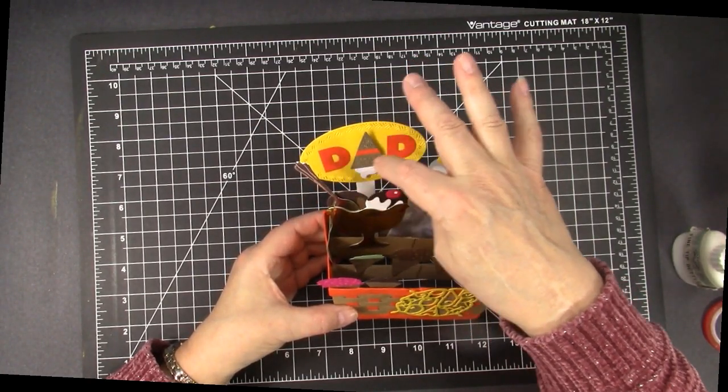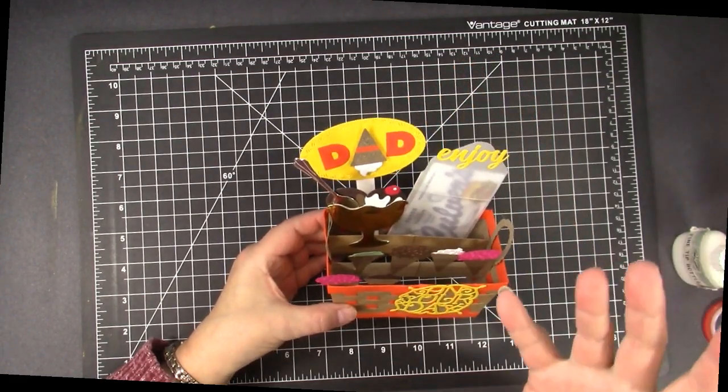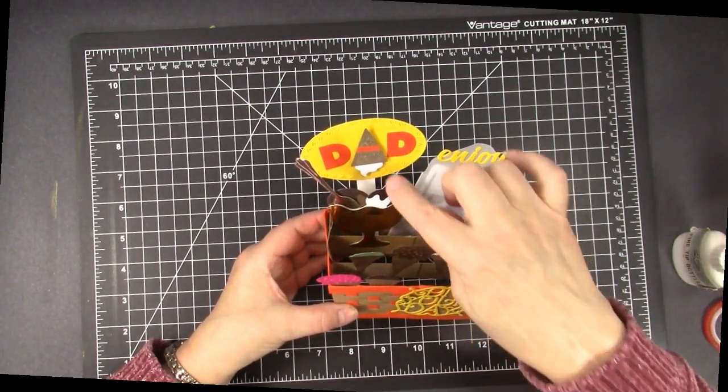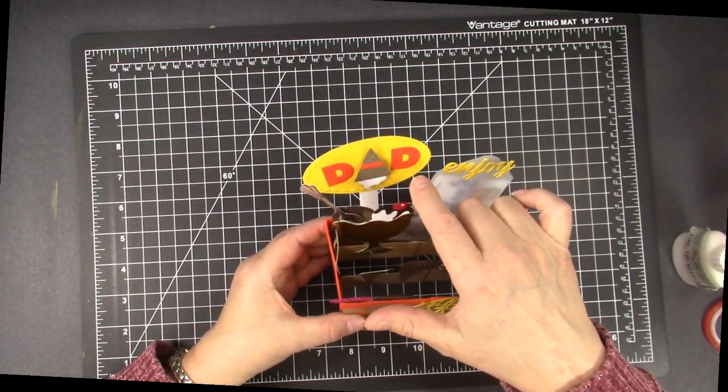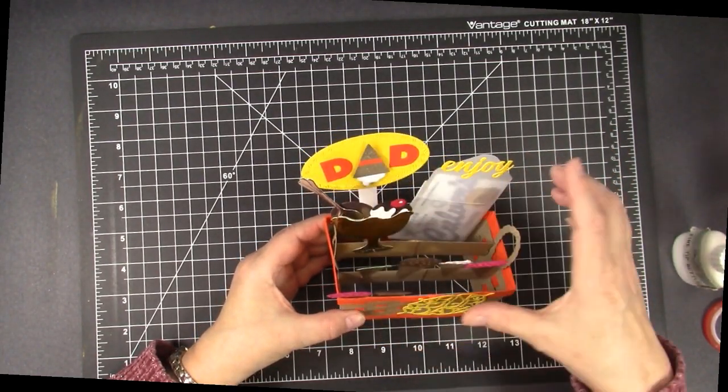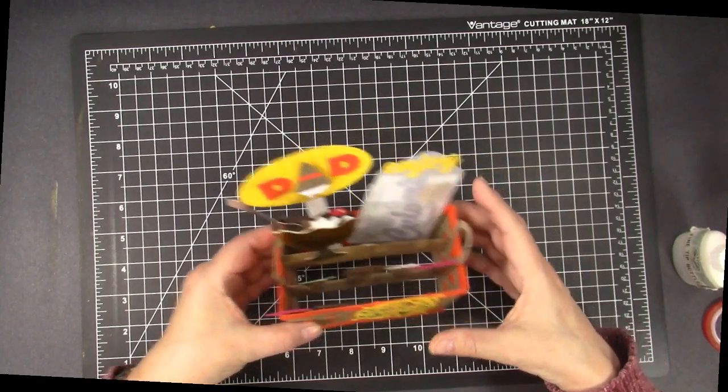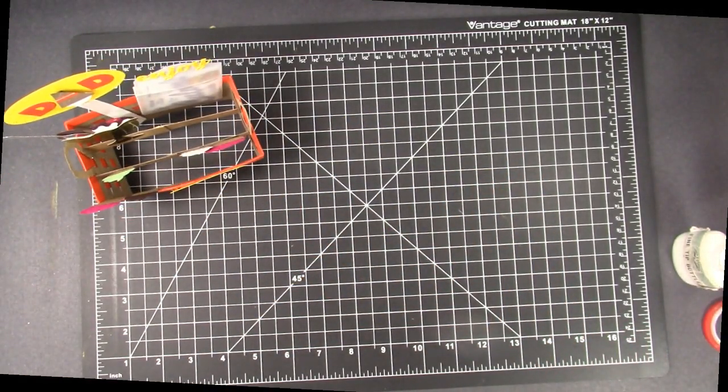And then this DAD I was really proud because I just came up with this idea. The A is an upside down ice cream cone. So DAD and most of these dies are from Karen Berniston as I will show you.